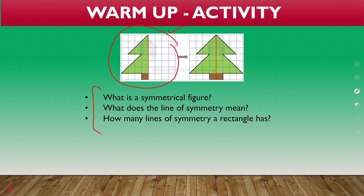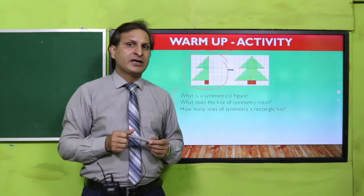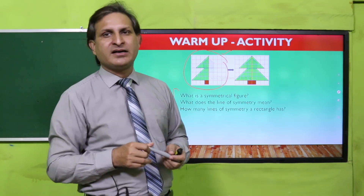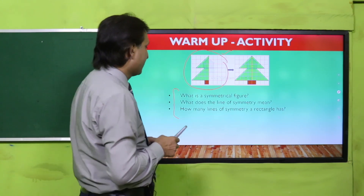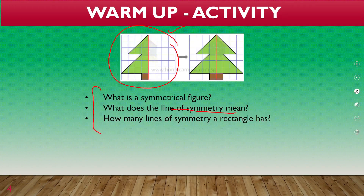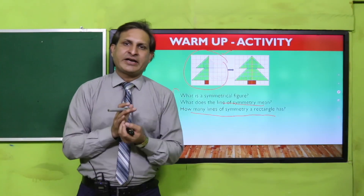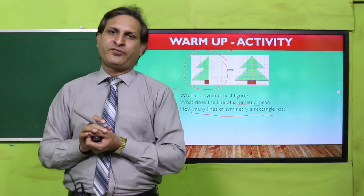क्या है symmetrical figure? मैंने आपको previous lesson में बताया था कि symmetrical objects वो होते हैं जिनमें line of symmetry exist करे — ऐसी shapes symmetrical होती हैं। Line of symmetry का क्या मतलब है? और rectangle में कितनी lines of symmetry हैं? हमने एक paper folding activity भी की थी — यहाँ से हम लोगों ने line of symmetry को find किया था।